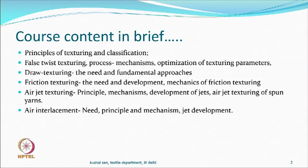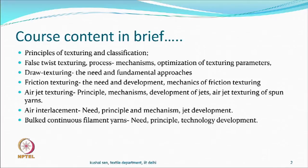Related to this topic is air interlacement, which is not exactly texturing, but in multifilament processes it is used as one of the processes because it is an attachment available on various machines. There is also an interesting process called bulk continuous filament (BCF) yarn, where the speed of the whole process is very high — it could be in the range of 4000 meters per minute — and this also comes under the umbrella of texturing.